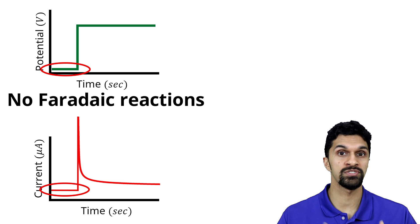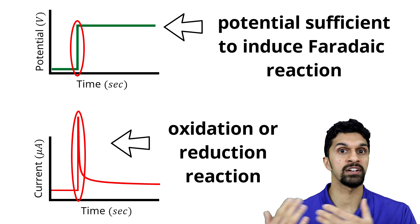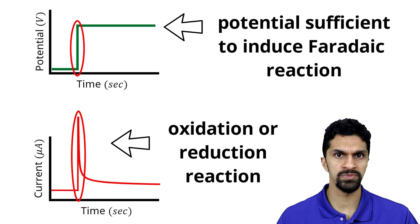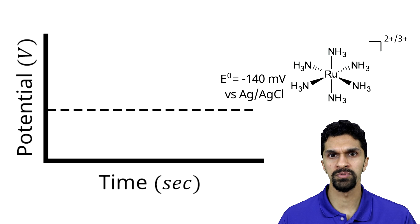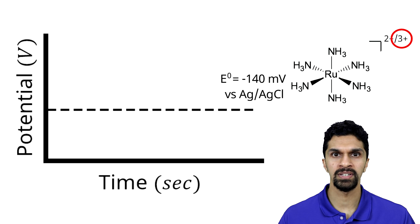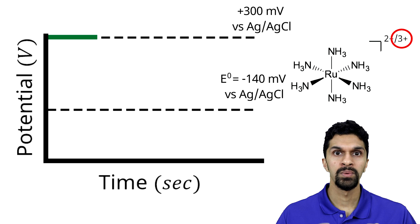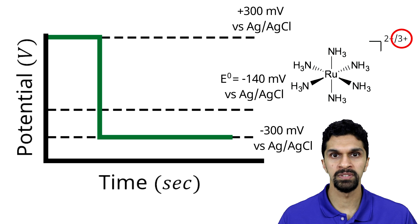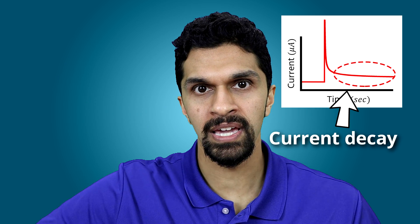Prior to the potential step, the working electrode is held at a potential where no redox reactions are occurring — no faradaic electron transfers. When the experiment starts, we step the potential to a point sufficiently high to induce oxidation or sufficiently low to induce reduction. For example, the standard redox potential for the ruthenium hexamine 2+/3+ redox pair is about −140 mV vs. silver/silver chloride. Starting at +300 mV to keep ruthenium hexamine in the 3+ state, we then step to −300 mV to reduce it from 3+ to 2+. This produces the observed current spike followed by a gradual decay.